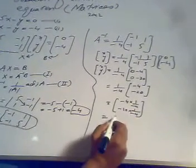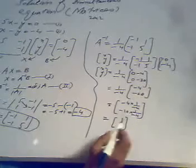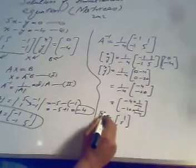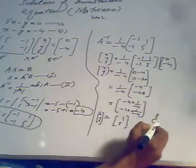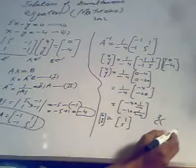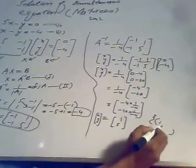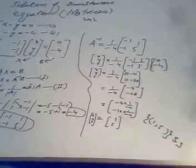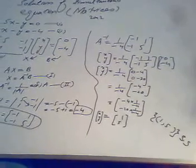The result is [1; 5], so XY = [1; 5]. This means x = 1 and y = 5, and this is our solution set. This is how we solve simultaneous equations with two variables with the help of matrices.